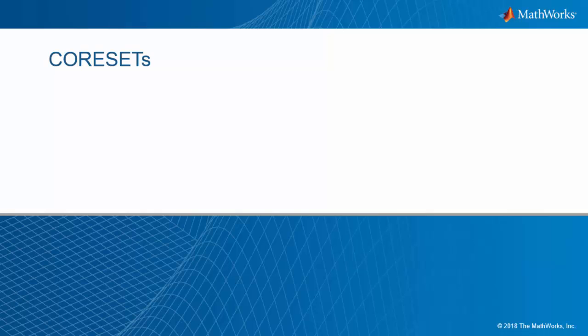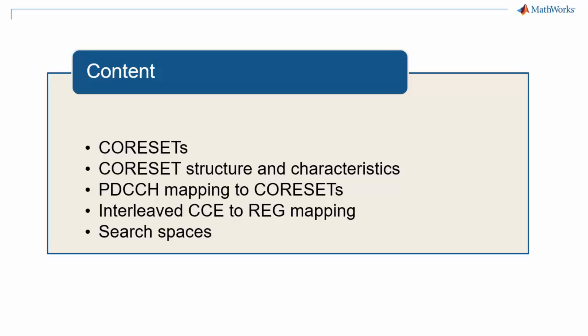This is a new episode of our series 5G Explained. In this video, we discuss the concept of core sets and how it applies to downlink control information. We will introduce core sets, look at the core set structure and characteristics, and how the PDCCH is mapped to it.